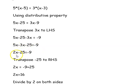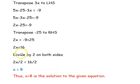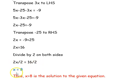So 5x minus 3x is 2x, giving 2x minus 25 equal to minus 9. Transposing minus 25 to the right hand side gives 2x equal to minus 9 plus 25, which is 2x equal to 16. Dividing by 2 on both sides gives x equal to 8. So x equal to 8 is the solution.